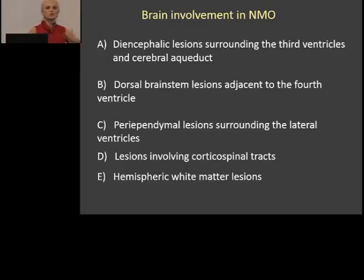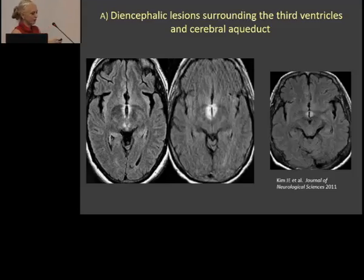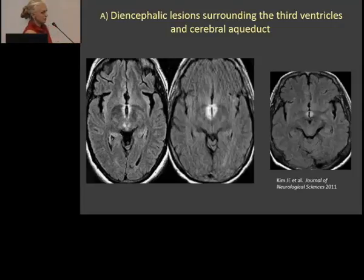Now we come to the interesting part because this is actually a lecture on white matter diseases and brain lesions in neuromyelitis optica. There are five described types of brain involvement in NMO. The most described is the so-called diencephalic or periventricular lesion — the region of the brain with a very high concentration of Aquaporin-4 — resulting in high signal intensity around the ventricles, especially around the third ventricle.